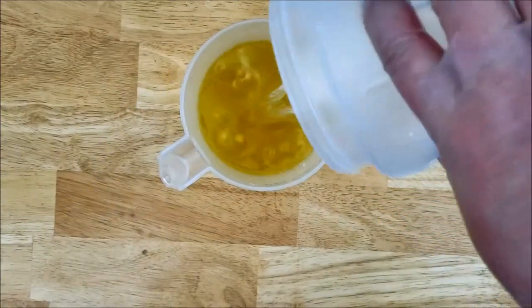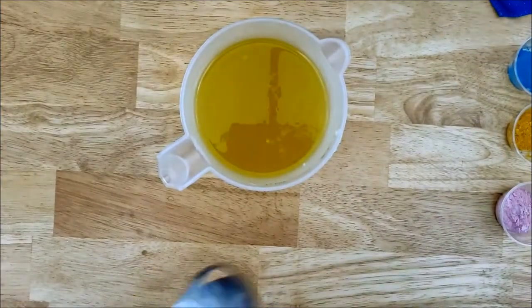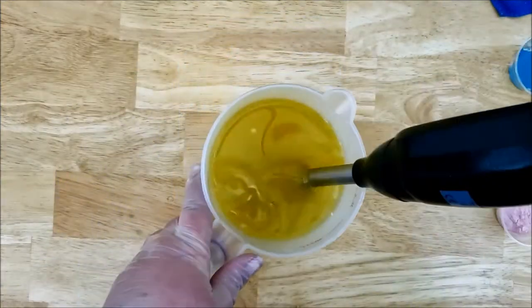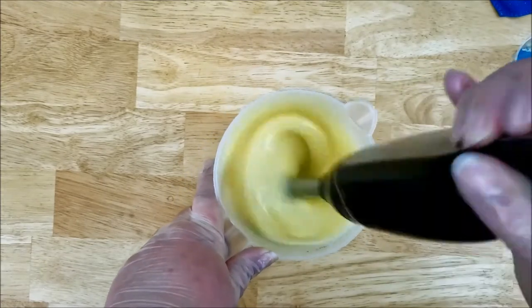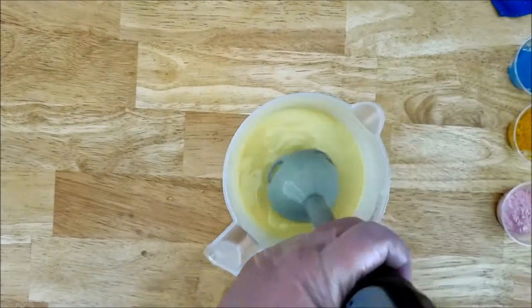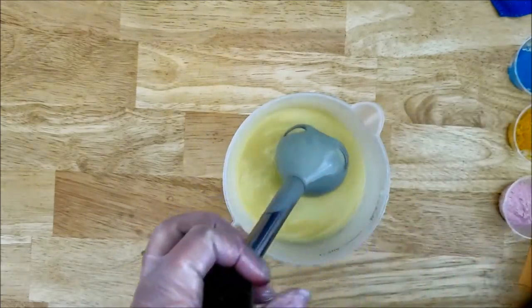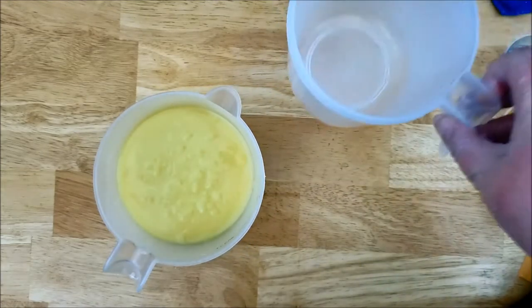So this is the lye water going into the oils. The oils I use are vegan and organic. I'm just going to stick them together. Since I'll be dividing this into three batches, I'm going to just get the oil and lye mixed together. I'm not going to attempt to get it to a thick trace or anything. I want this soap to stay fluid.